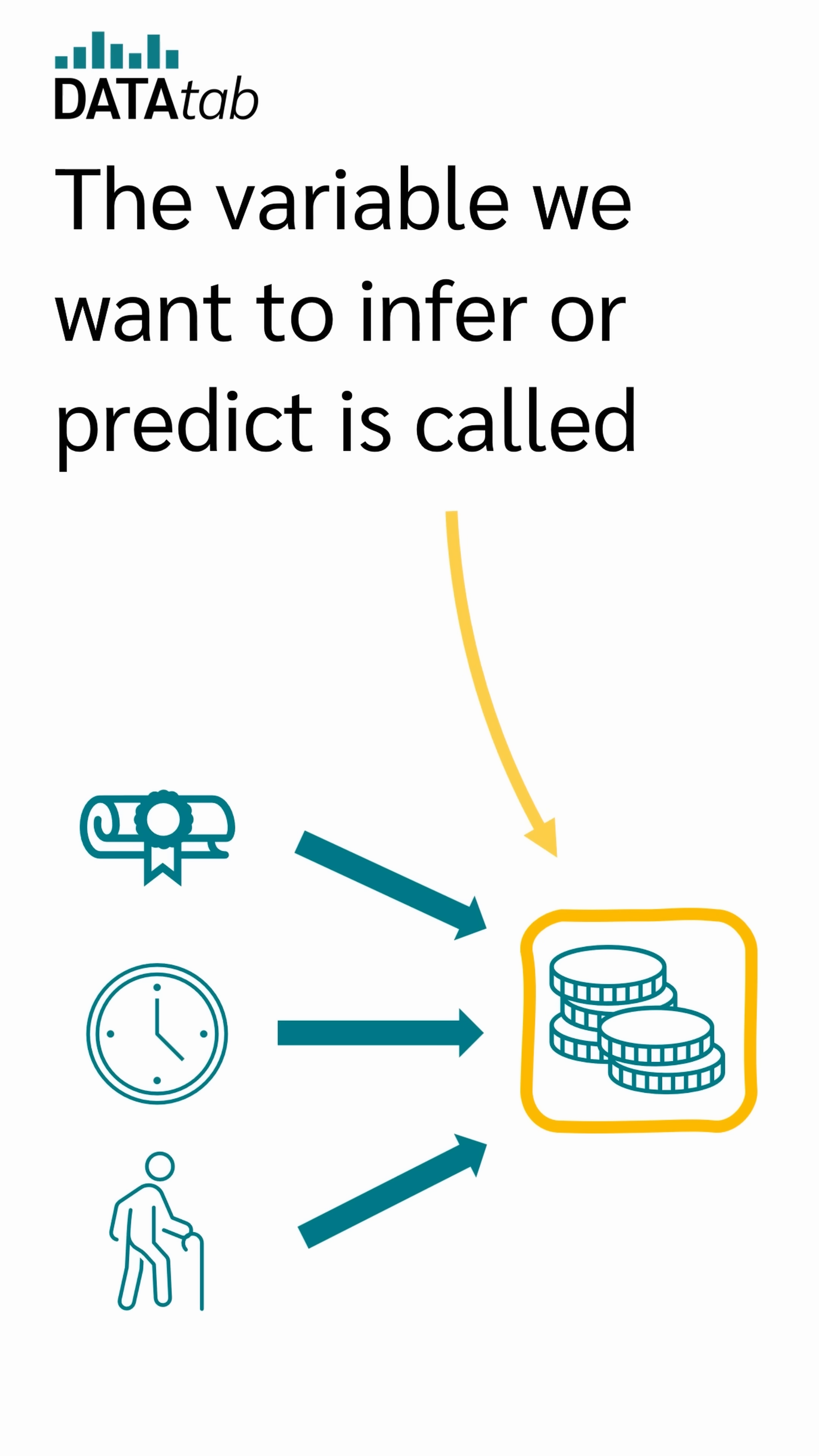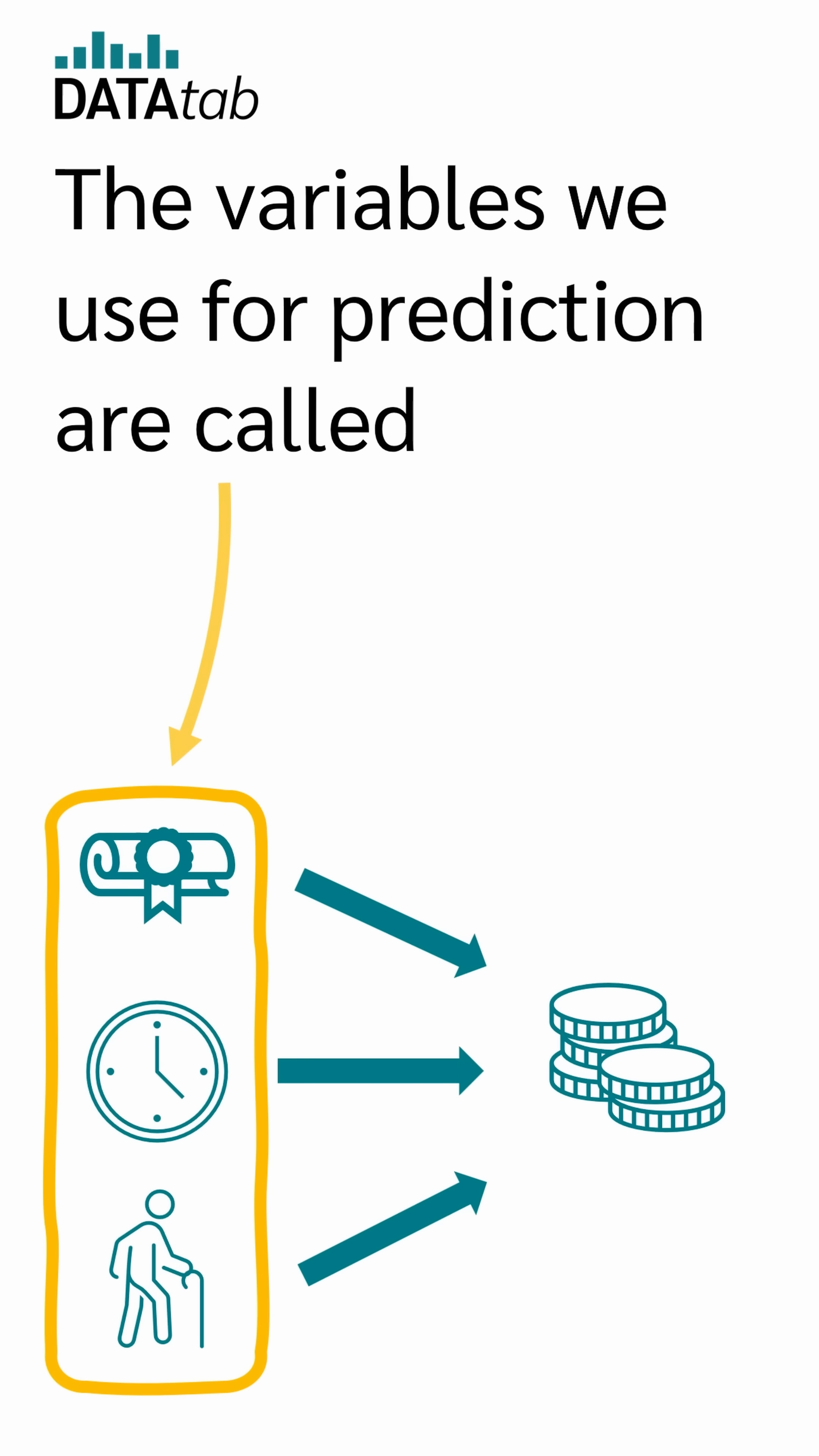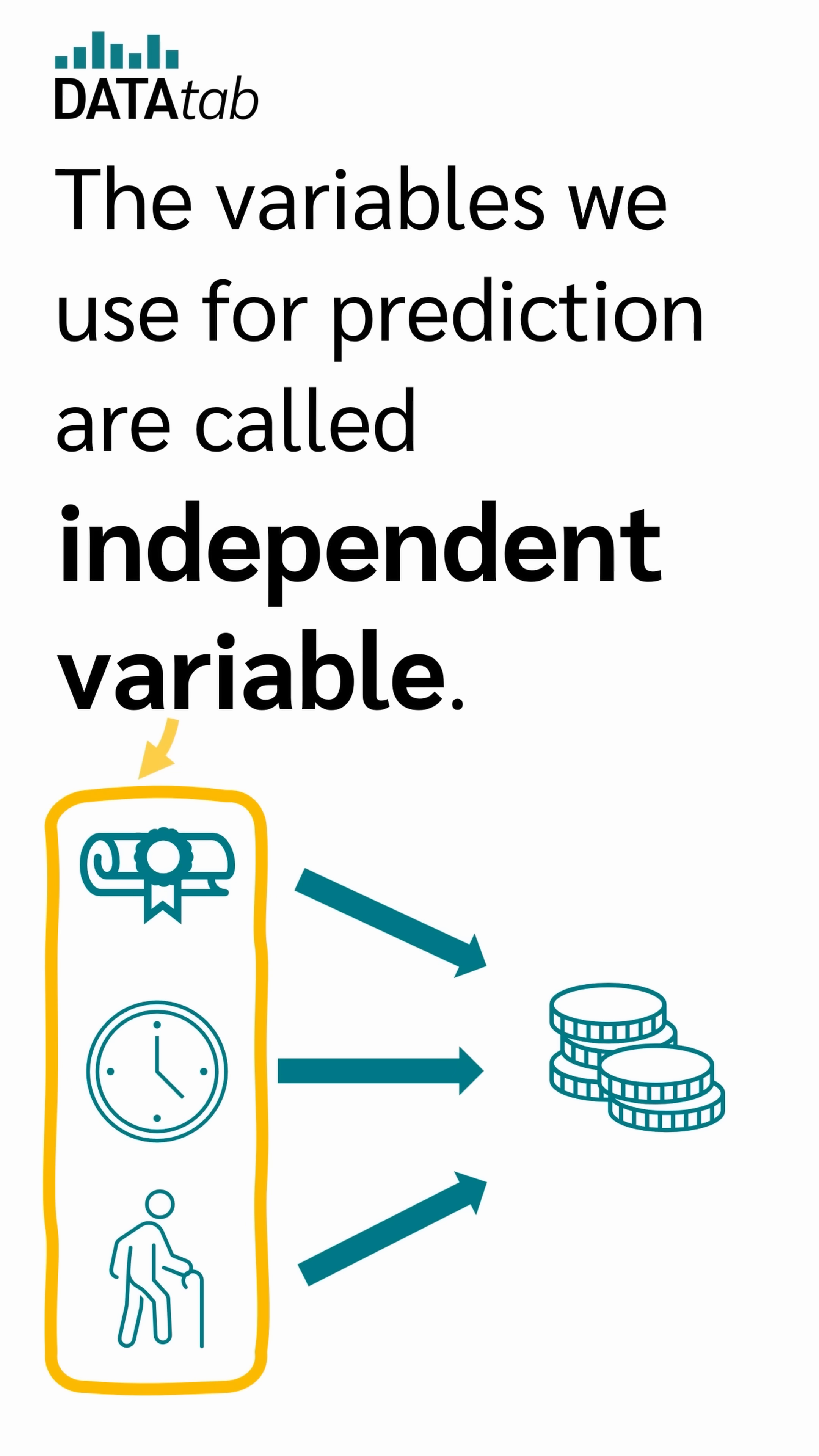The variable we want to infer or predict is called the dependent variable. The variables used for prediction are called independent variables.